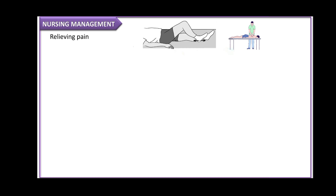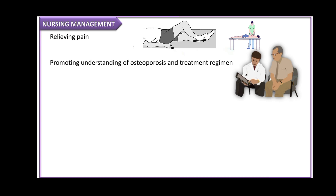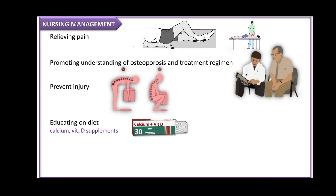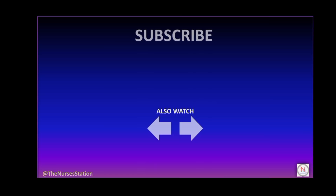For nursing management: to relieve pain, advise the patient to rest in bed in a supine or side-lying position several times a day; knee flexion increases comfort. Intermittent local heat and back rubs promote muscle relaxation. Patient education focuses on factors influencing osteoporosis development, interventions to arrest or slow the process, and measures to relieve symptoms. The nurse encourages walking, good body mechanics, and good posture. Instruct patients on daily intake of calcium and vitamin D, the importance of sunlight exposure, and a balanced diet. Administer medications as prescribed.